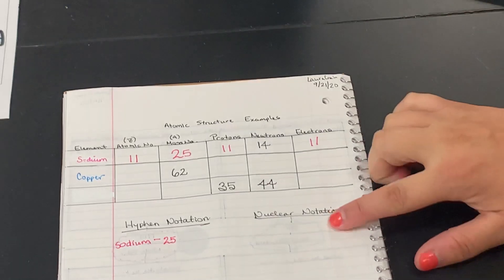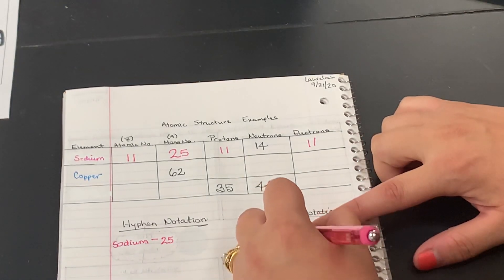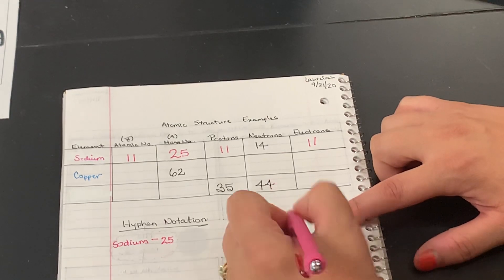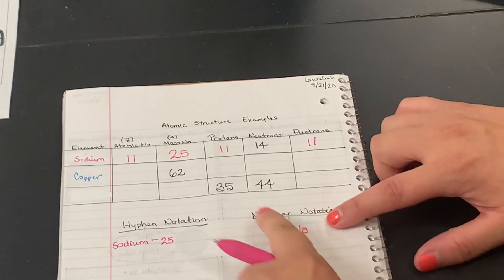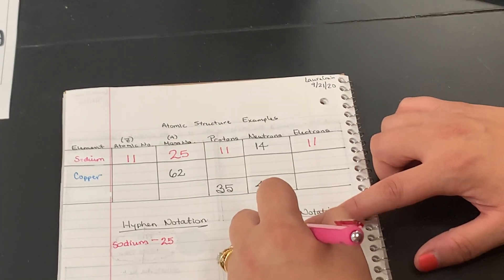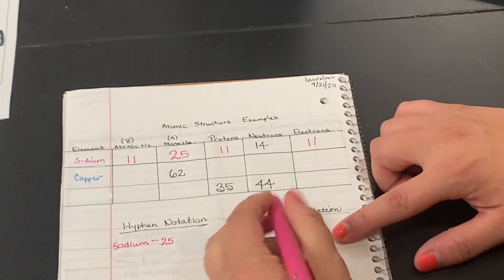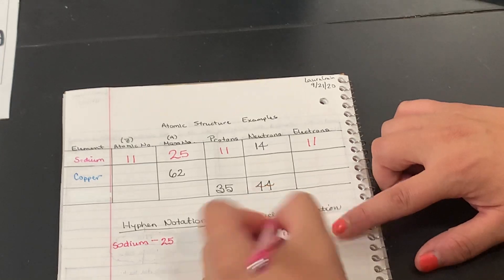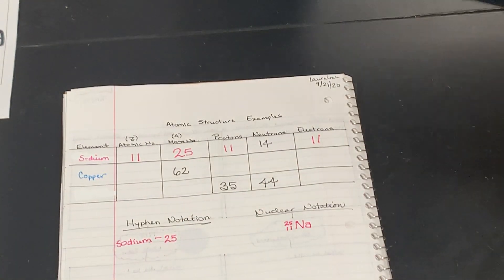For the nuclear notation, we write the chemical symbol, which we looked up was N-A. The mass number goes on top, so I'm going to take that 25 and put it on the top. Atomic number goes on bottom, so I'm going to put that 11 on the bottom.